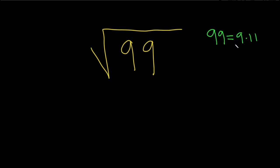And the square root of 9 is 3. So now we simply replace the 99 with 9 times 11. So this is 9 times 11.